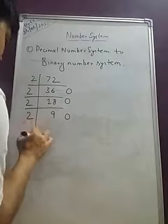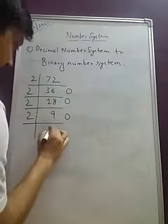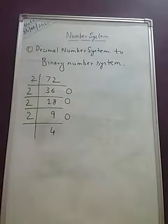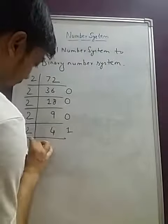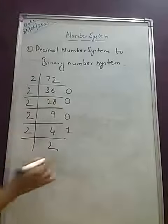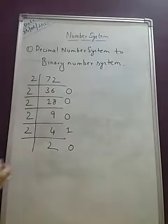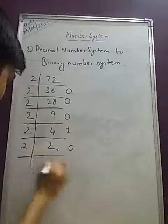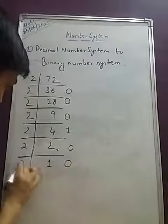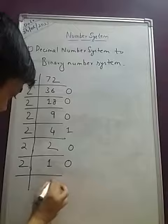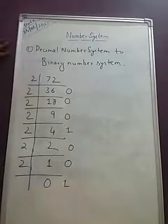Now if it is divided by 2 again, it will go for 4 times. 1 will be the remainder. Again next it will be going for 2 times and no remainder will be here. Next it will go for 1 times and there will be no remainder. Next it will go for 0 times and 1 will be the remainder.